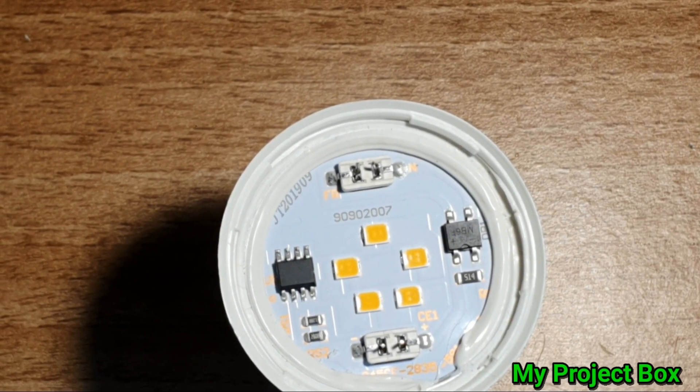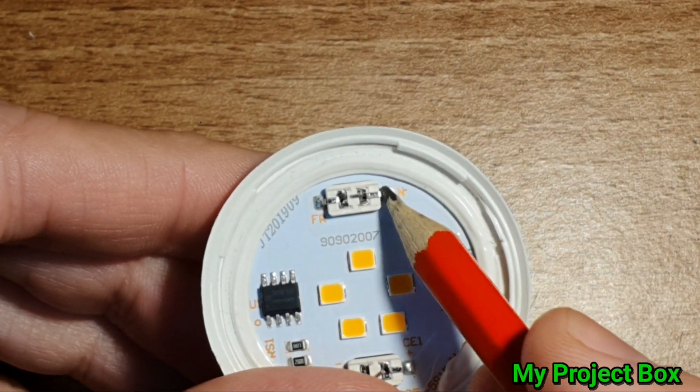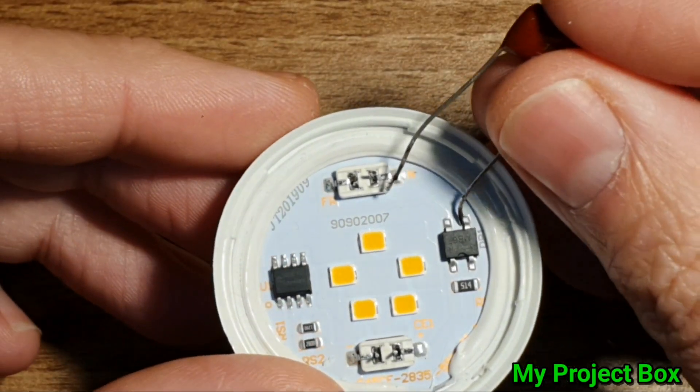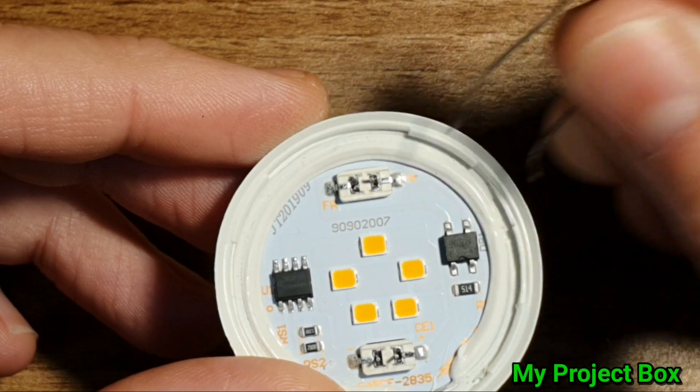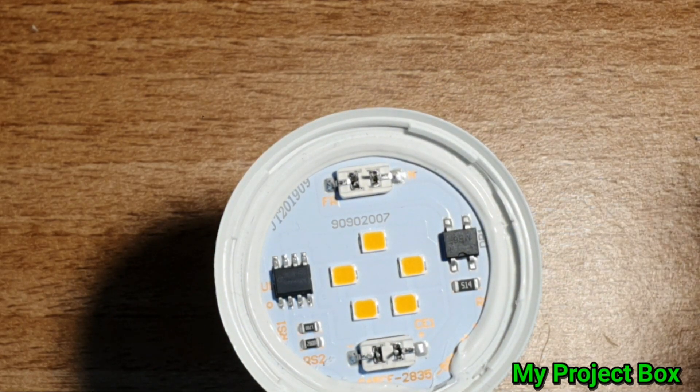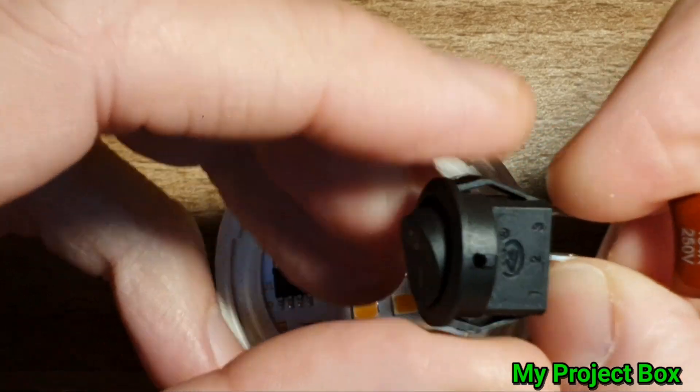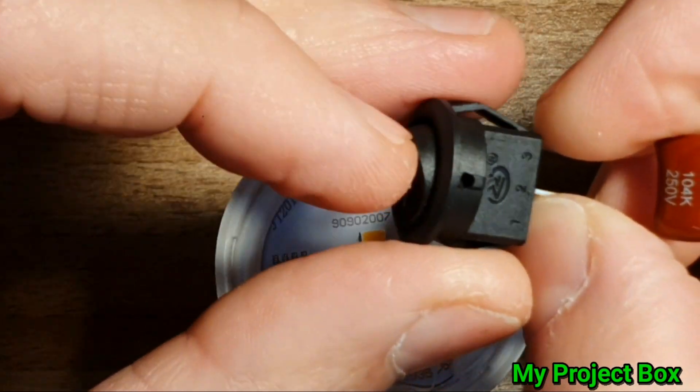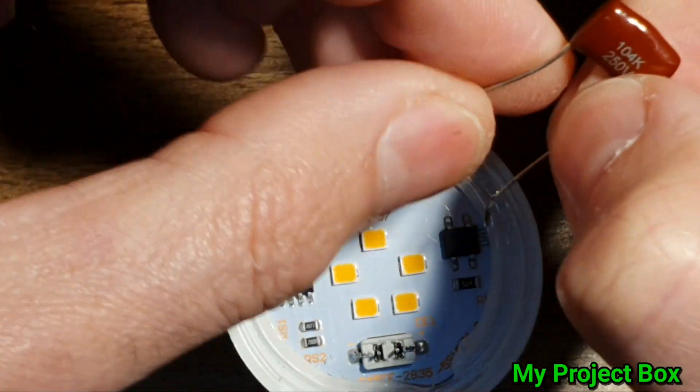The easiest place to break it would be just there. Then we can have the capacitor going between there and there. What the switch would do is simply bridge out the capacitor. So when it bridges out the capacitor it'll be on maximum, and when the switch is turned off then the capacitor would be in line.